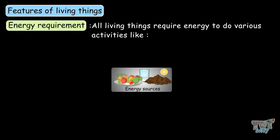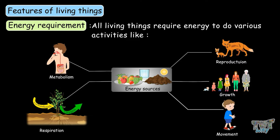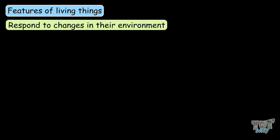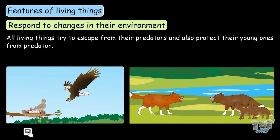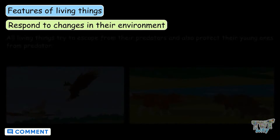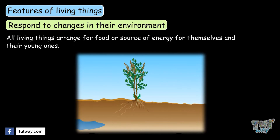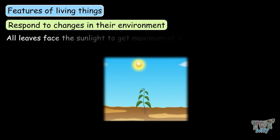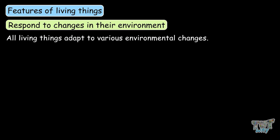Energy requirement — all living things require energy to do various activities like reproduction, growth, movement, respiration, development, and metabolism. Next is response to changes in their environment. All living things respond to their environment; for example, all living things try to escape from their predators and to protect their young ones from predators. All living things arrange for food or a source of energy for themselves and their young ones. All plants grow in the direction of moist soil. All leaves face the sunlight to get maximum of it. All living things adapt to various environmental changes.